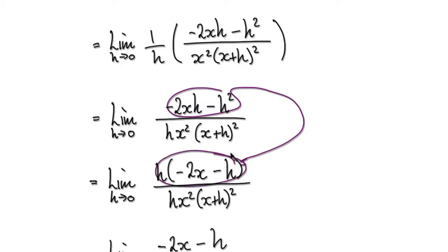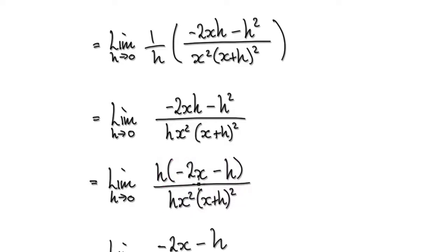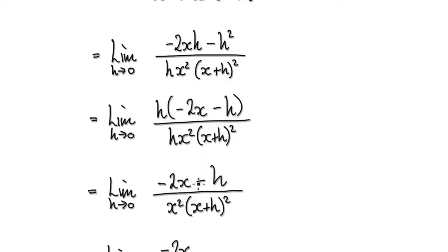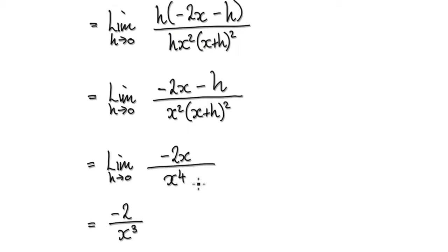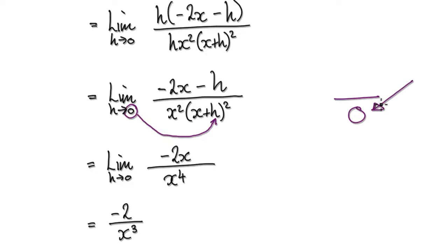Now you've got one bubble multiplying another bubble in the numerator, and down in the denominator you have h multiplying with the rest. The two h's cancel each other out, giving you this expression here. Now you can start putting zero in for h and nothing breaks down — you're not actually dividing by zero.